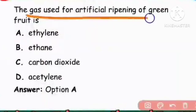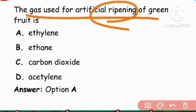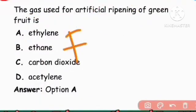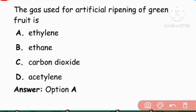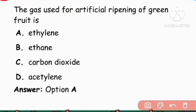Next question: The gas used for artificial ripening of fruit. Ethylene is used for the artificial ripening of fruit. That is the right answer.